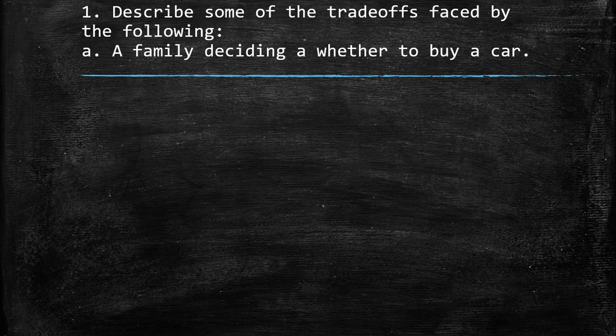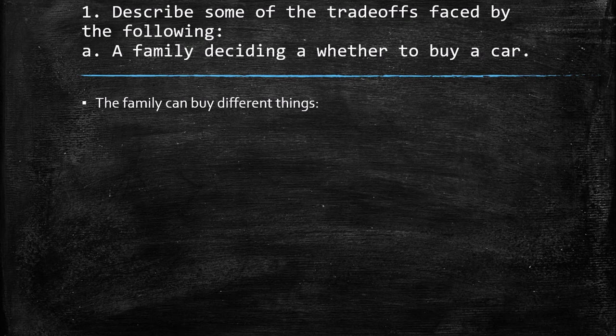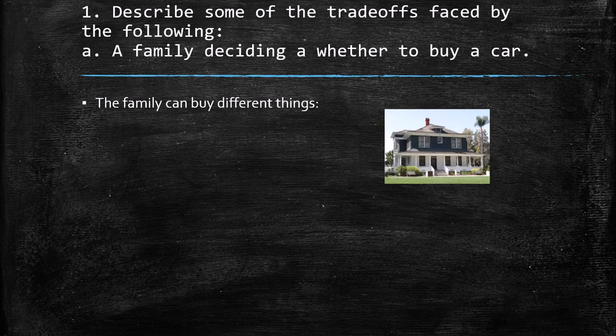The first question asks to describe some of the trade-offs faced by the following. A: a family deciding whether to buy a car. The family can buy different things — this is the trade-off — because the money they are going to spend on the car, they can spend on different stuff. For example, they can buy a house, or use it as a first fee for paying the house.